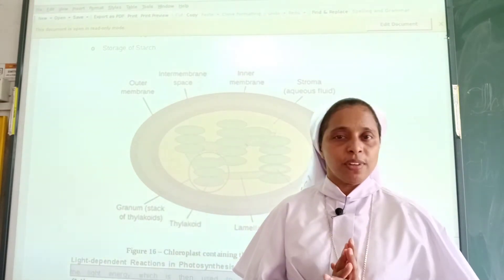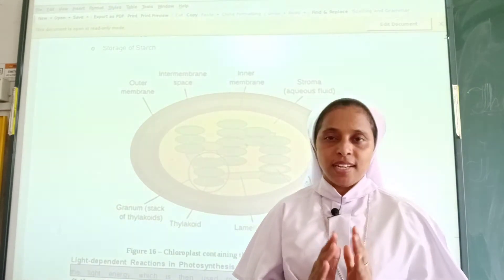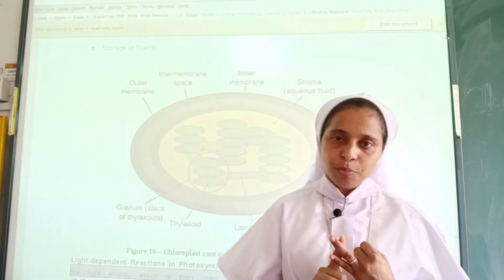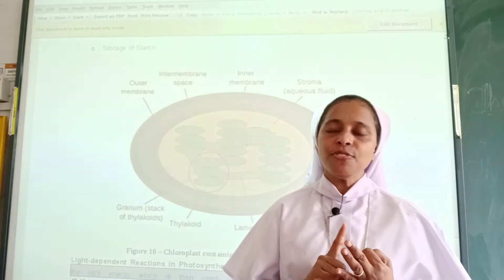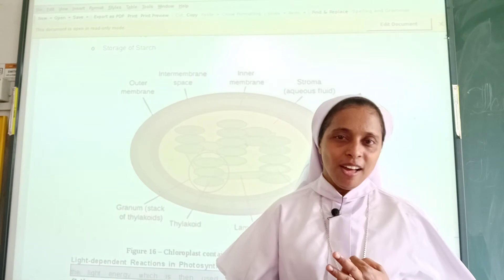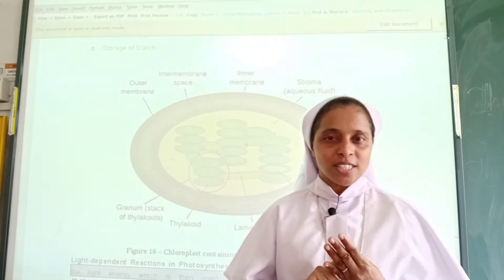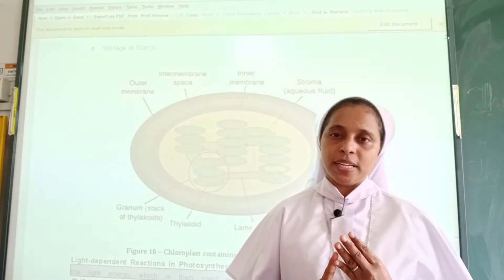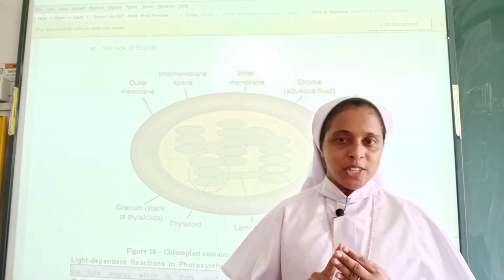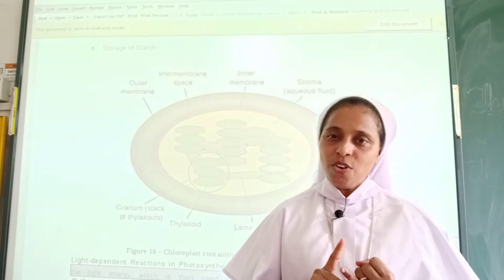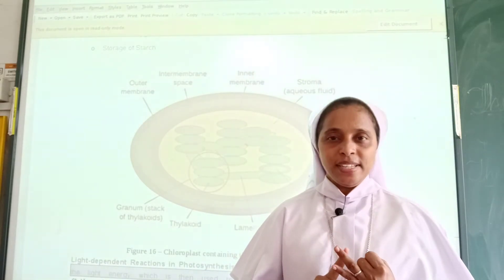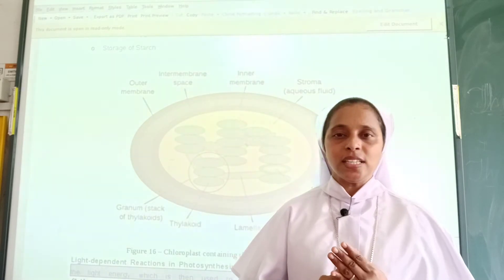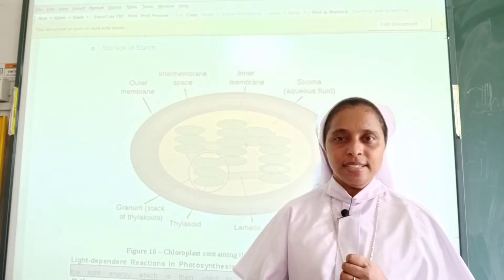What are the main functions of chloroplast? The main functions are: conduction of photosynthesis in the plants, protein synthesis, releasing oxygen, and storage of starch. These are the main functions of the chloroplast.